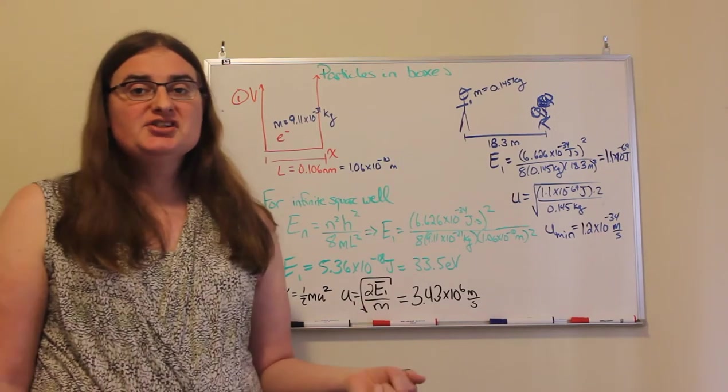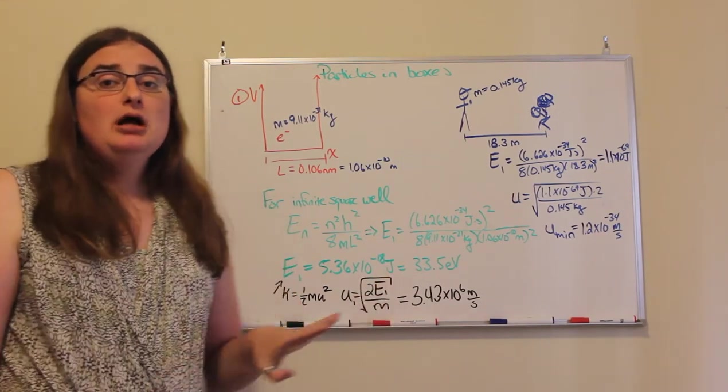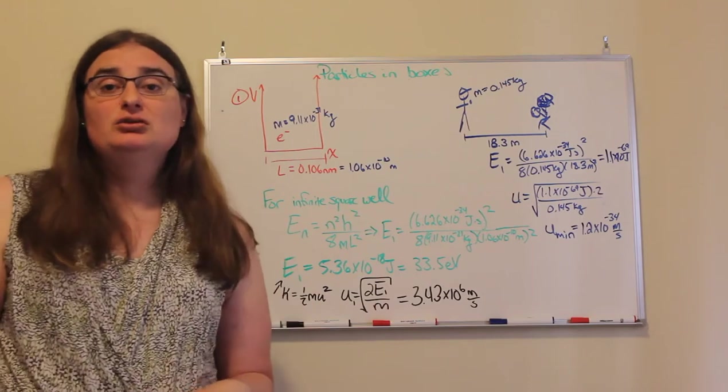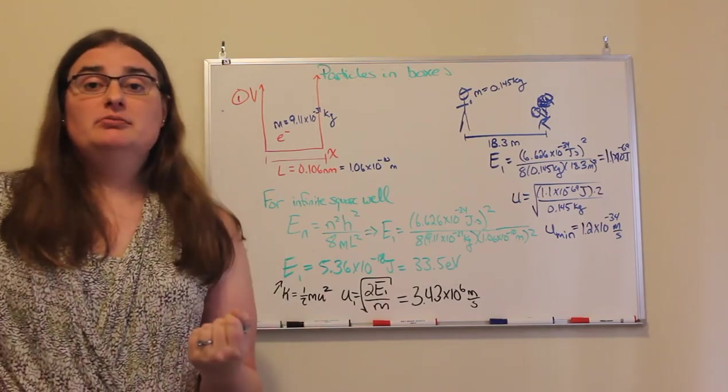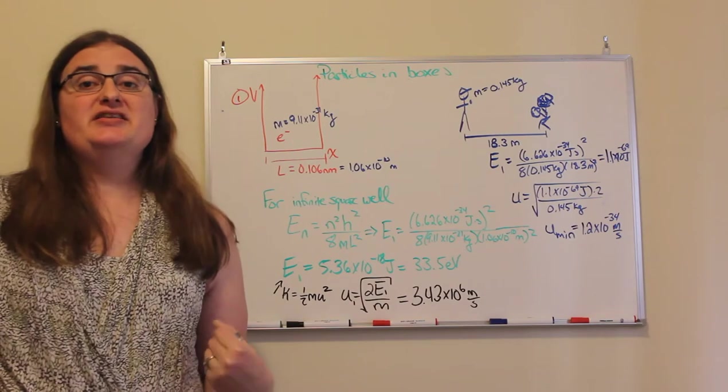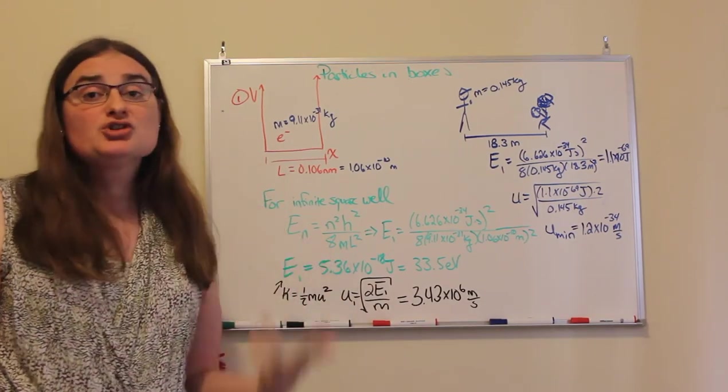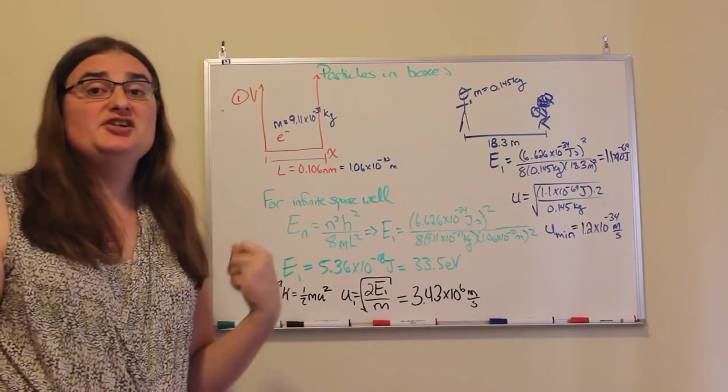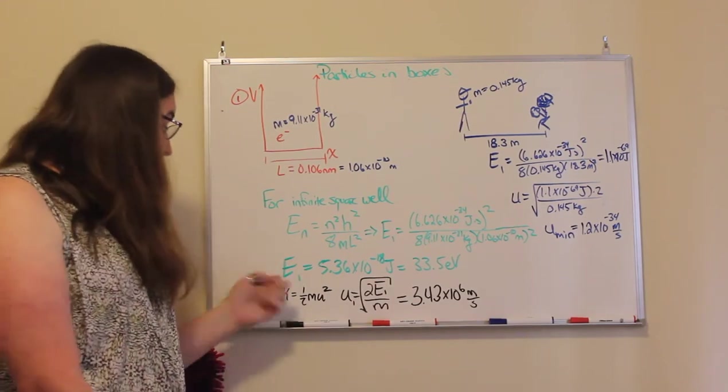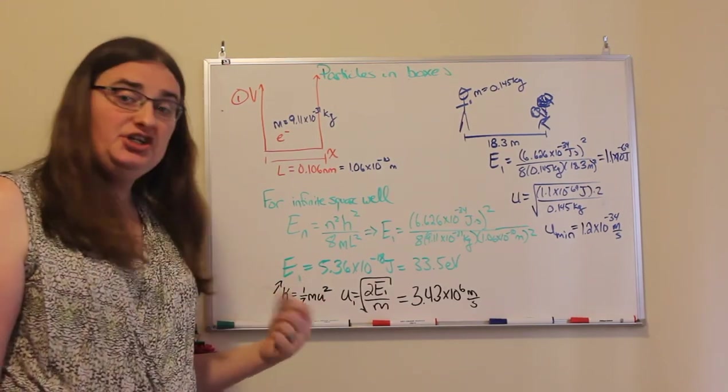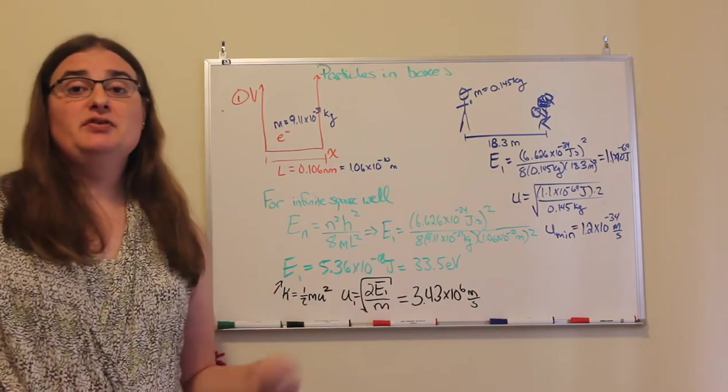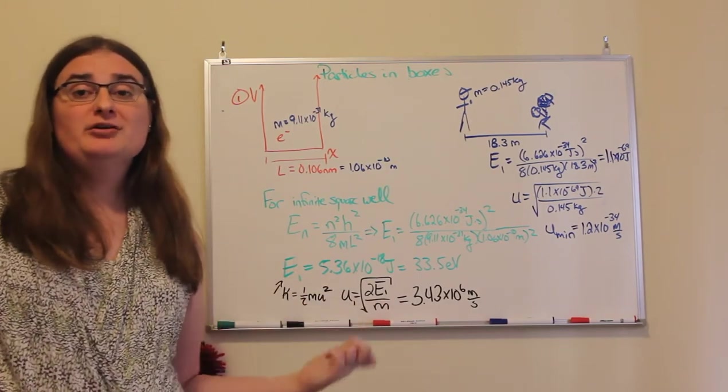Now, in terms of minimum speed, I'm going to apply a classical kinetic energy formulation to this. This is calculating the total energy. Well, if there's no potential energy, the total energy is the kinetic energy. So if the kinetic energy would be one-half times the mass of our particle times the speed of our particle squared.